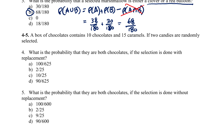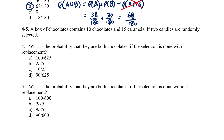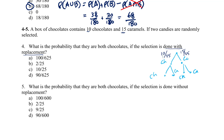For questions 4 and 5, we have a box of chocolates with 10 chocolates and 15 caramels, selecting two candies. A tree diagram helps visualize this. For the first draw there's a 10/25 chance of chocolate and 15/25 chance of caramel. For question 4, selection is done with replacement — so the second draw still has a 10/25 chance of chocolate, giving a probability of 100/625 for two chocolates.